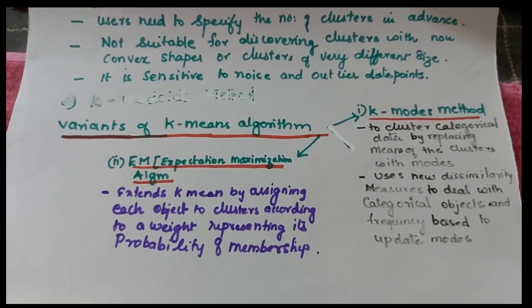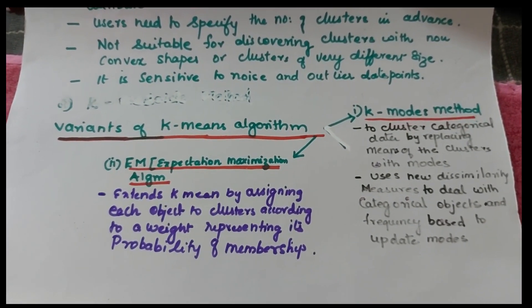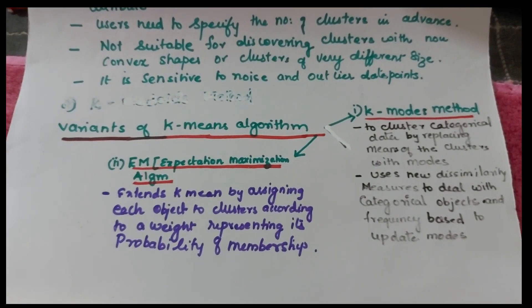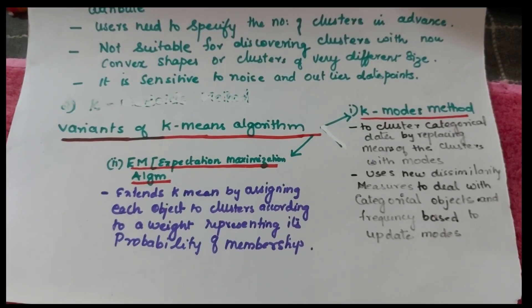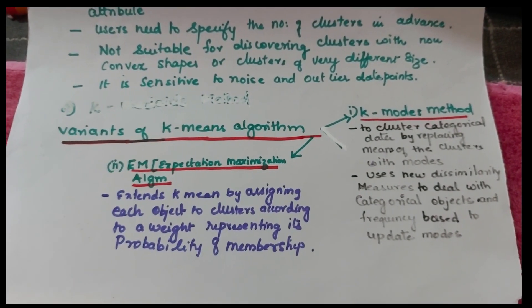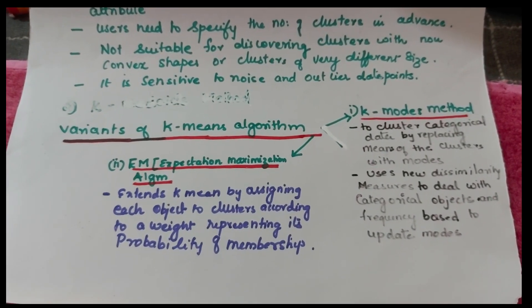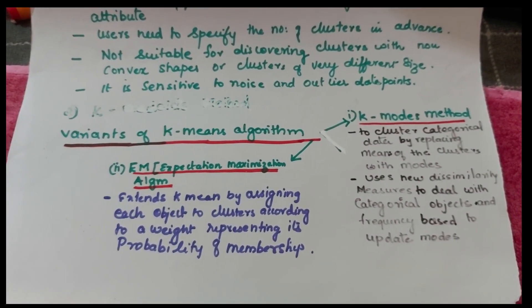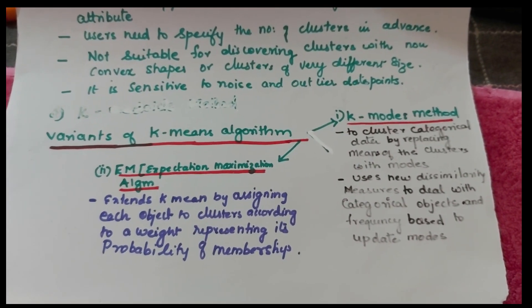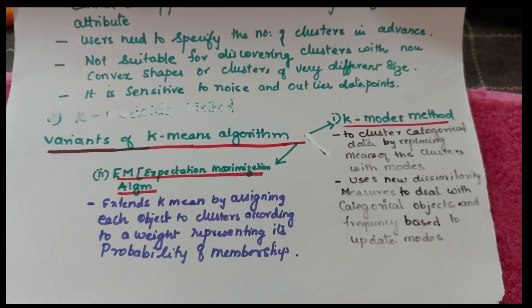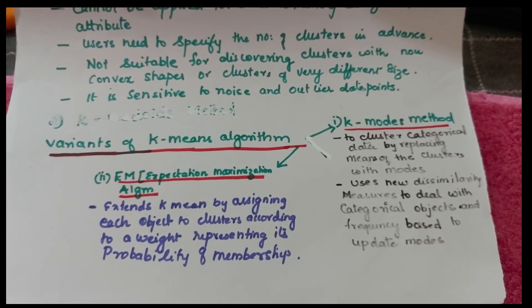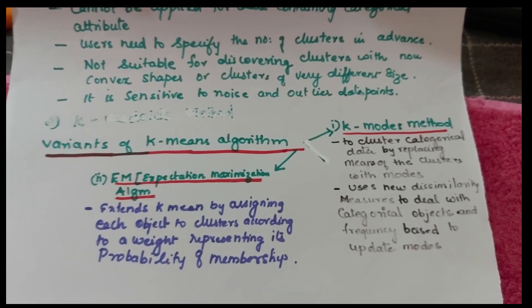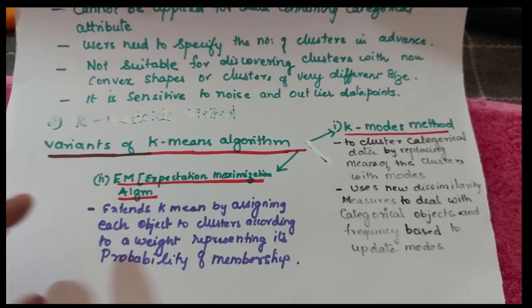K-Mode method clusters categorical data by replacing the mean of clusters with modes. It uses new dissimilarity measures to deal with categorical objects and frequency-based methods to update the modes. K-Mode is essentially the extension of K-Means for dealing with categorical data.